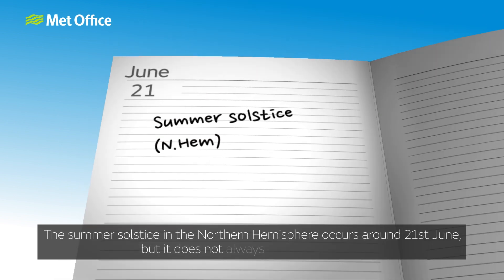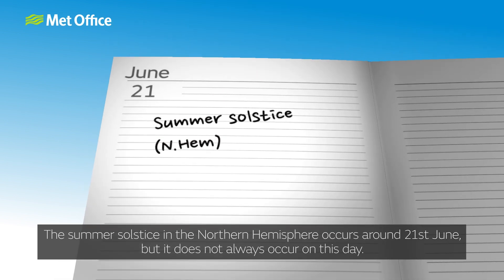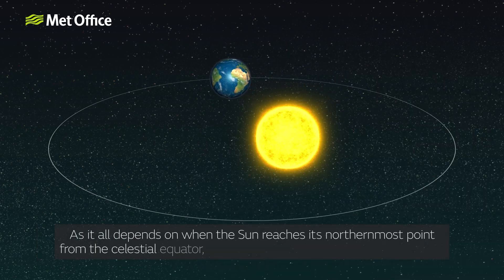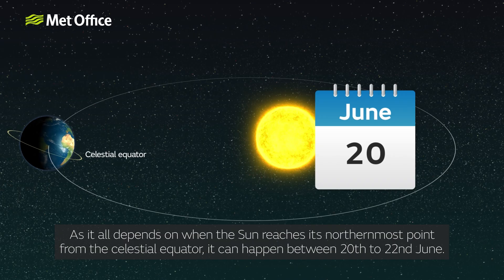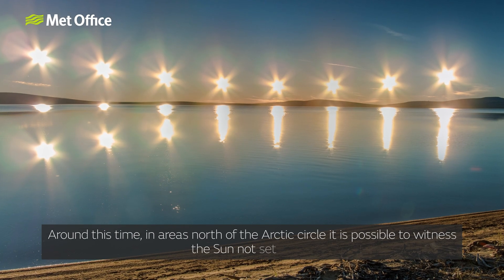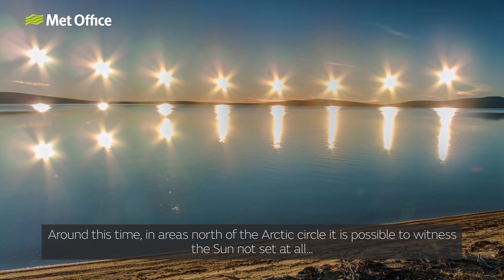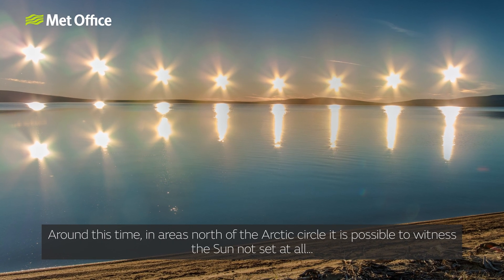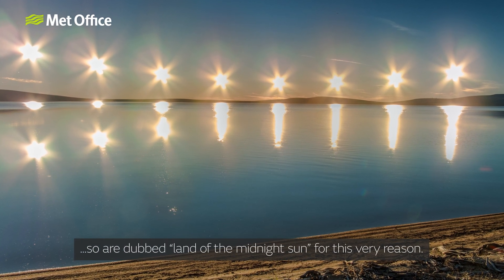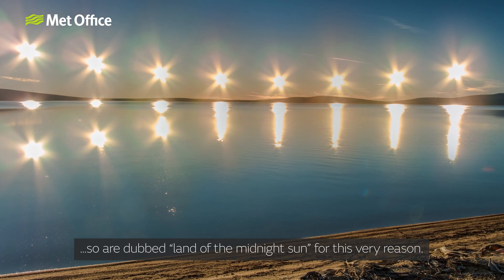The summer solstice in the northern hemisphere occurs around the 21st of June, but it does not always occur on this day. As it all depends on when the Sun reaches its northernmost point from the celestial equator, it can happen between the 20th to the 22nd of June. Around this time, in areas north of the Arctic Circle, it is possible to witness the Sun not set at all, so they are dubbed the 'land of the midnight Sun' for this very reason.